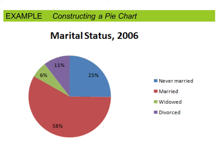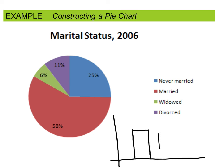Most statisticians, myself included, tend to prefer bar charts to pie charts. The reason is about how your eyes process small differences. It's easier to tell a small difference in the height of two bars than to determine the difference in the width of slices of pie. So generally, bar graphs make it a little bit easier to quickly see how the different categories relate to each other.